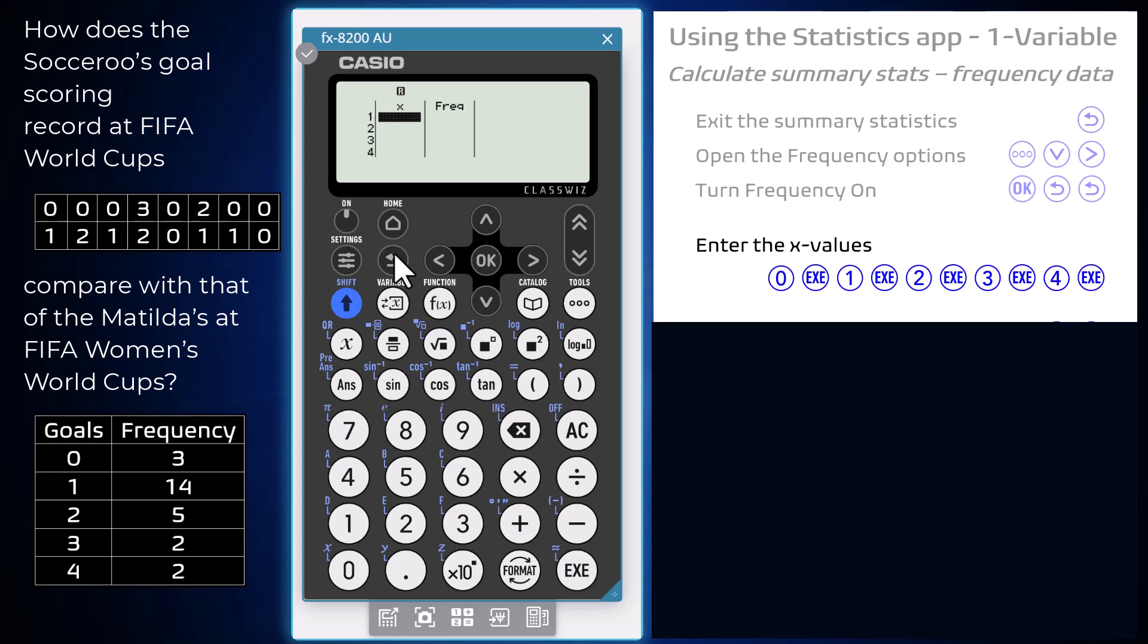To enter data in frequency table form, first enter the X values, in this case 0 to 4. Each entry is to be followed by execute.